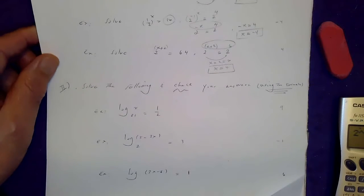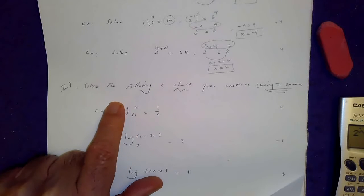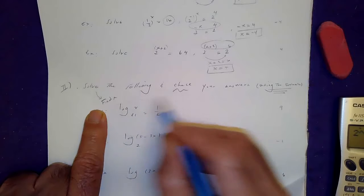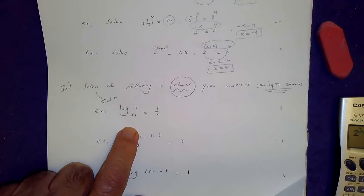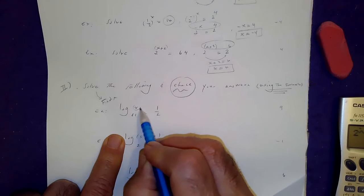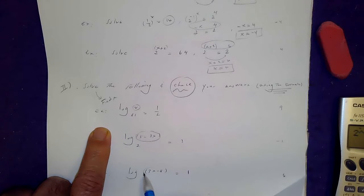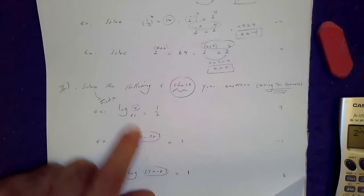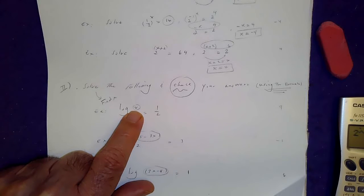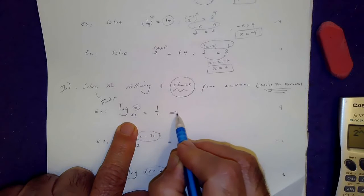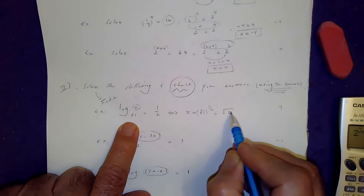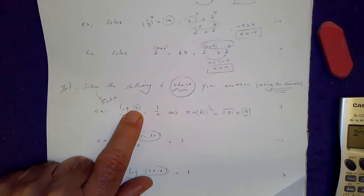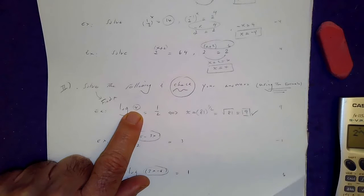Sometimes you have a logarithmic function in your equation. Solve means find x, but notice we have to check the answers — check that the logarand is not zero or a negative number, because the logarand cannot be zero or negative. To solve these problems, immediately change them into exponential form. So x equals 81 to the power of one-half, which is the square root of 81, giving the answer 9. Since 9 is positive, it passes the check and is an acceptable answer.